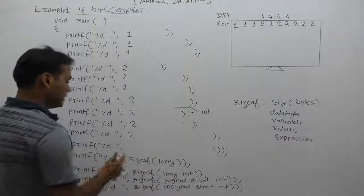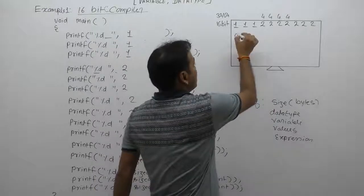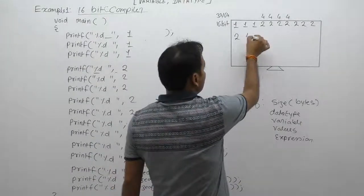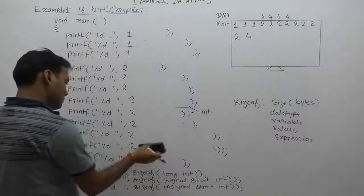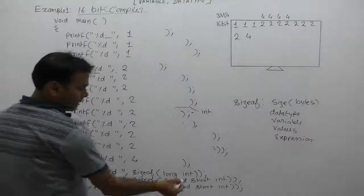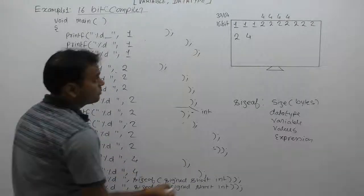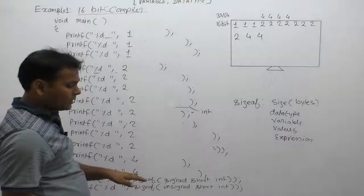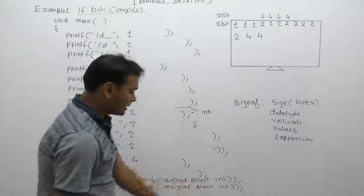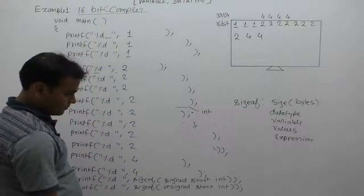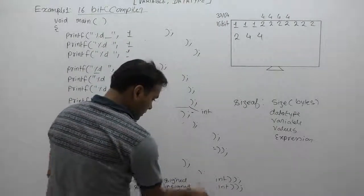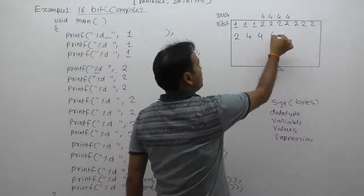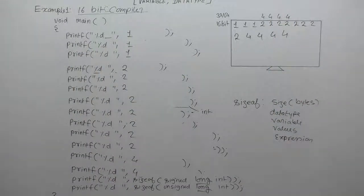For 64 or 32-bit compilers as well, the output is 2, so it prints 2. Next, sizeof(long) — it is equivalent to long integer. Long integer size is always 4 bytes for any type of compiler. So the result is 4. Next, sizeof(long int) — again the size will be exactly 4, so the next result is also 4. Then signed long int — signed or unsigned does not affect the size, so in the case of long int, the size is 4 bytes again.